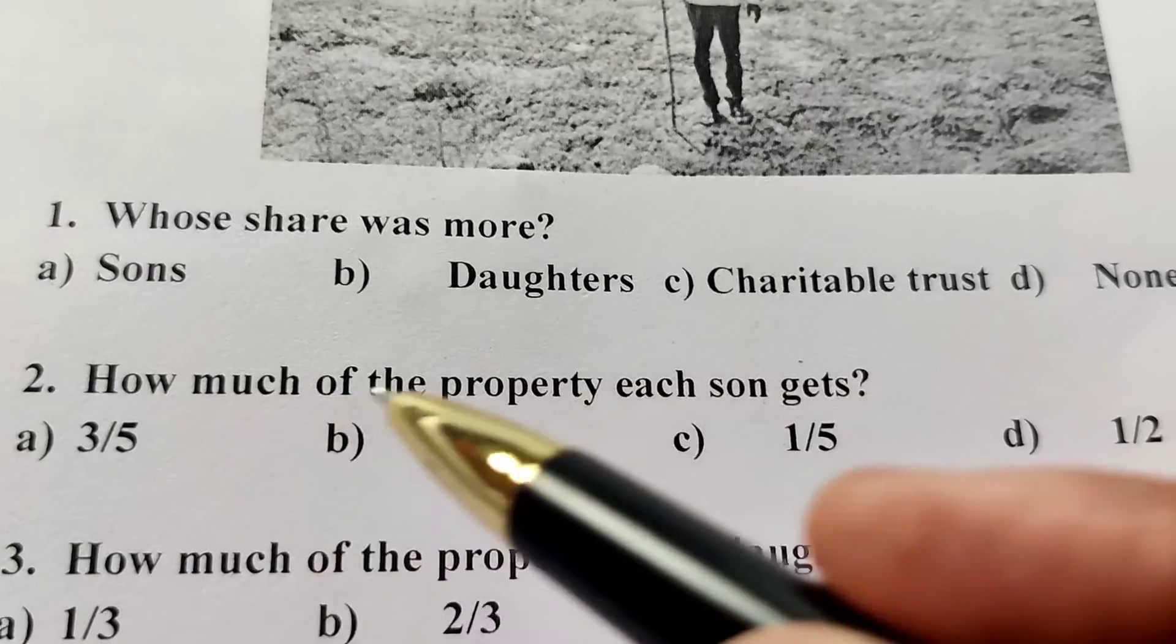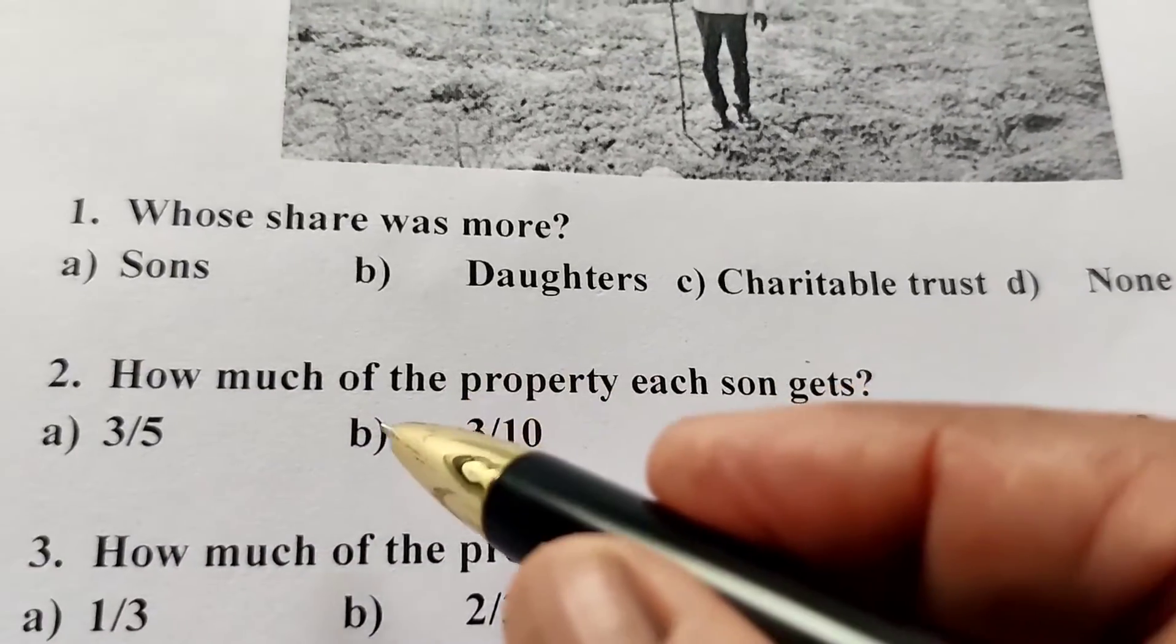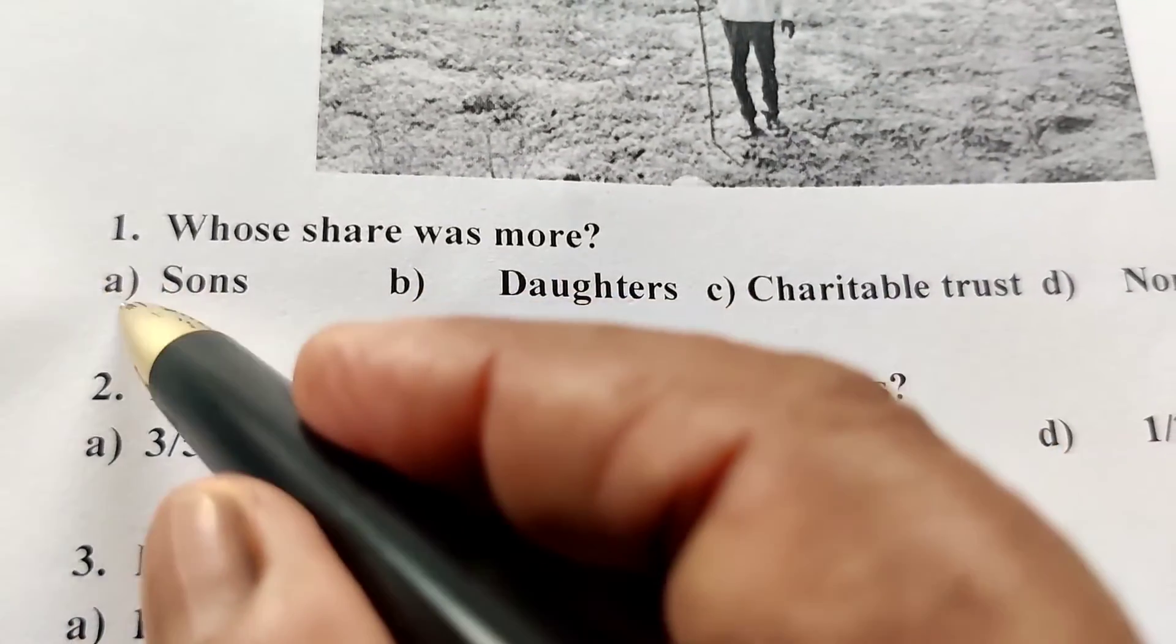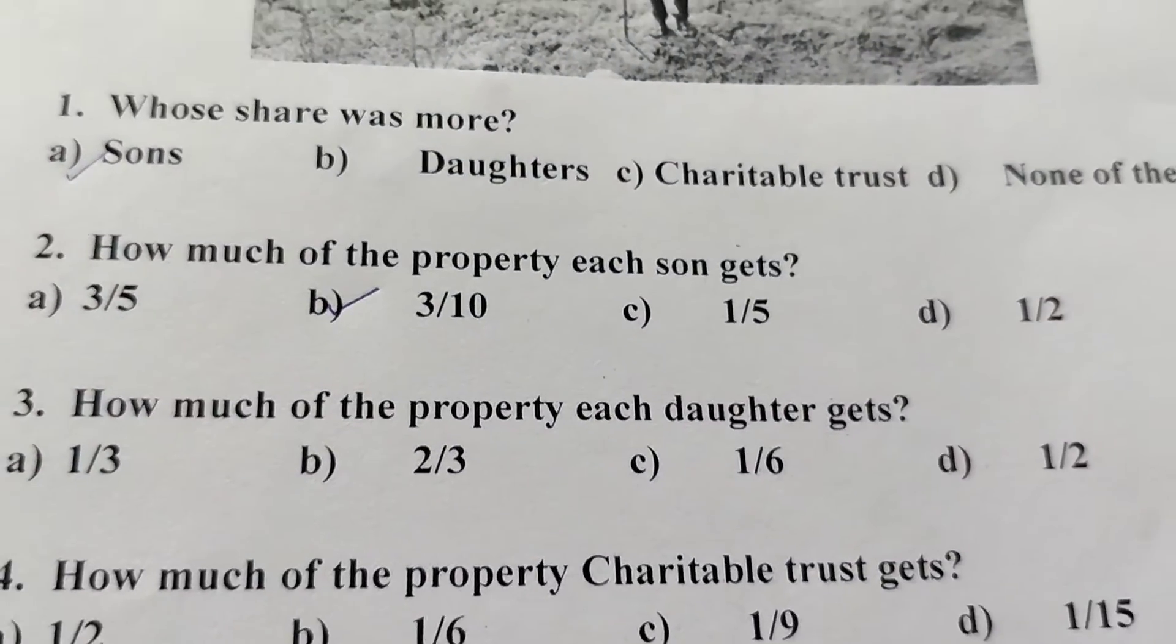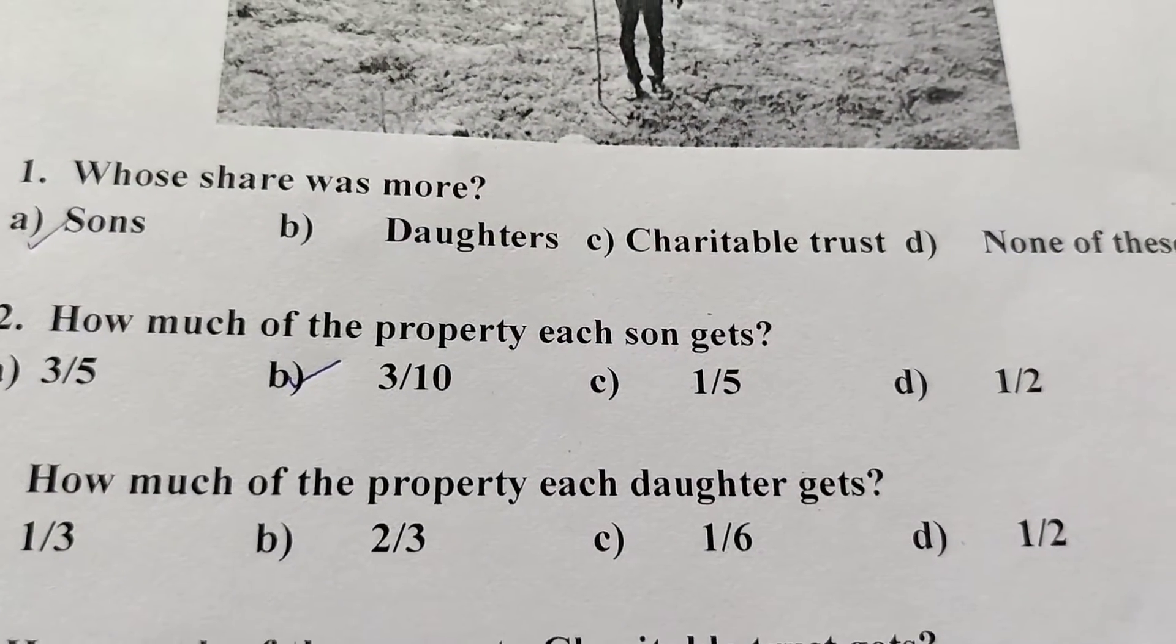3/5, 3/10, 1/5, 1/2. It is equal to 3/5. Next, third is how much of the property each daughter gets?